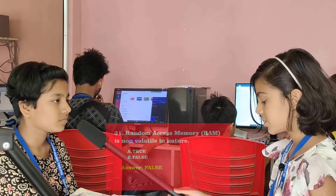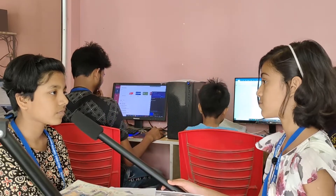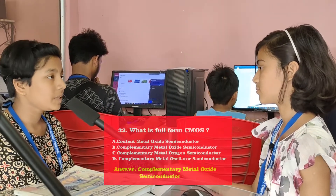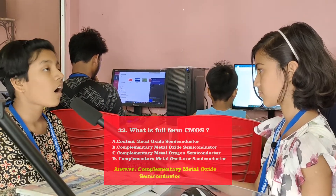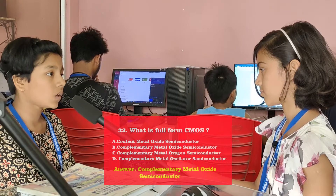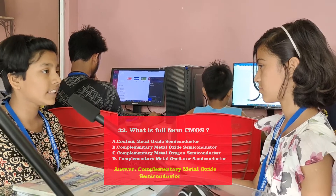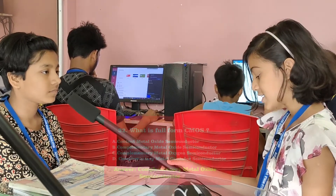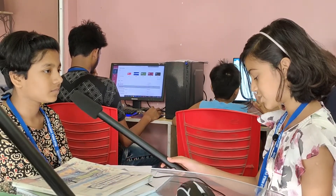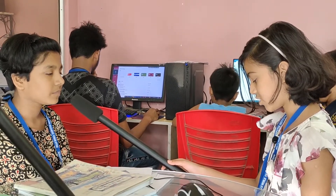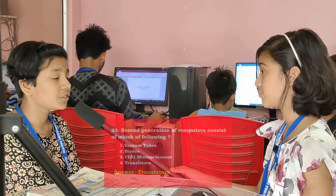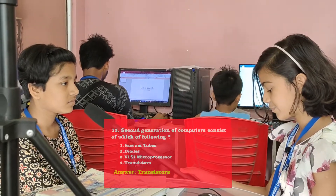What is the full form of CMOS? Complementary metal oxide semiconductor. Very good. Second generation of computer consists of which of the following? Transistor. Very good.